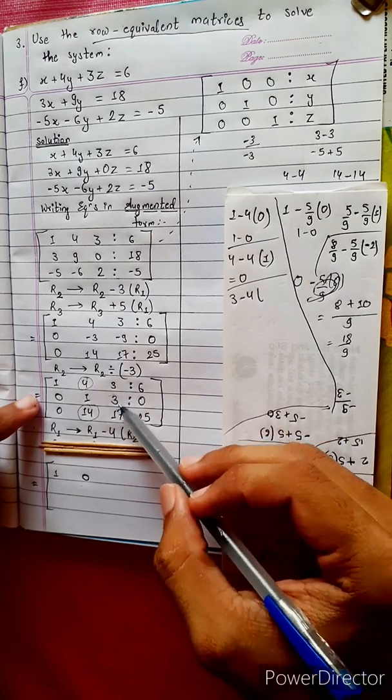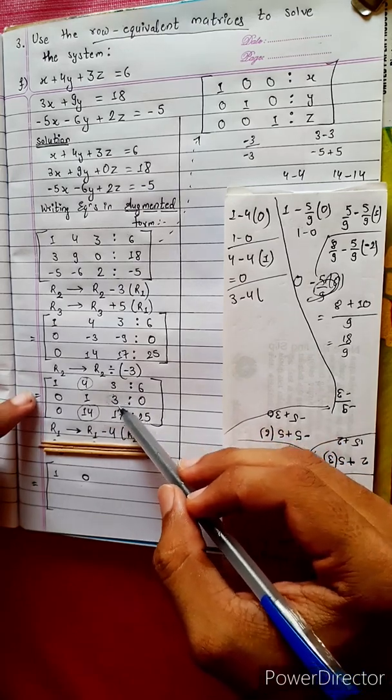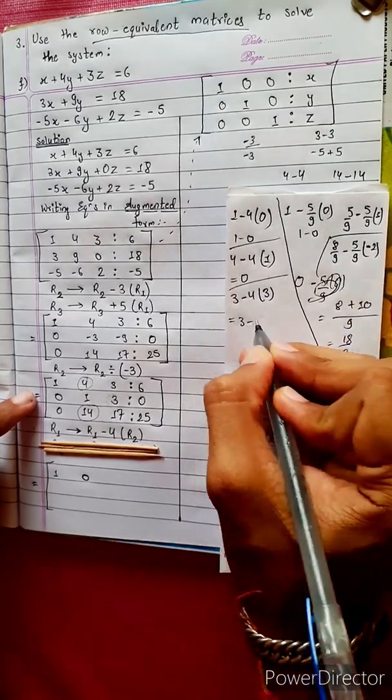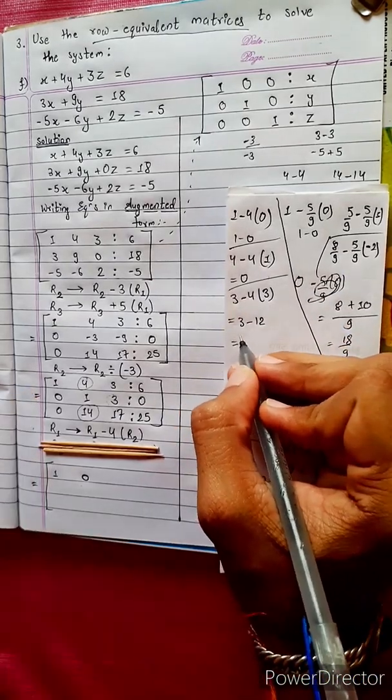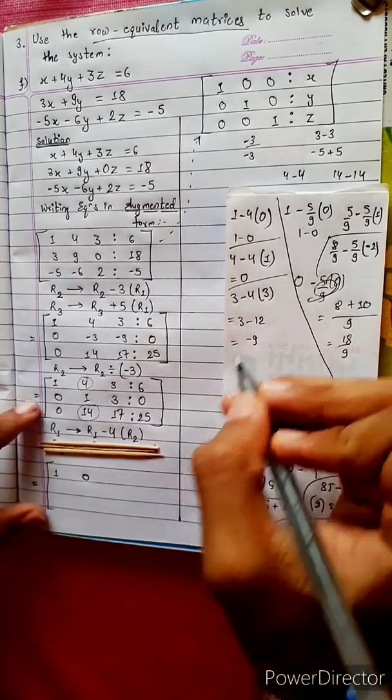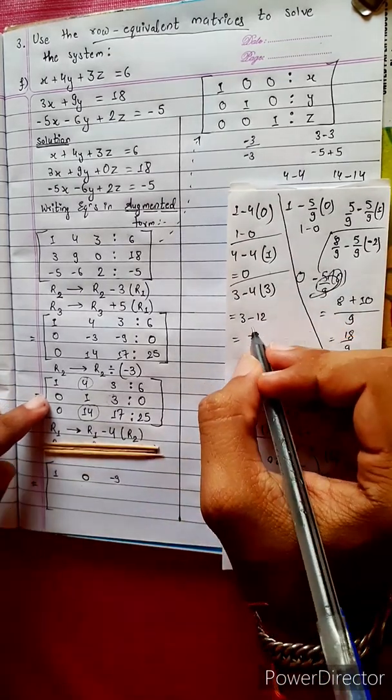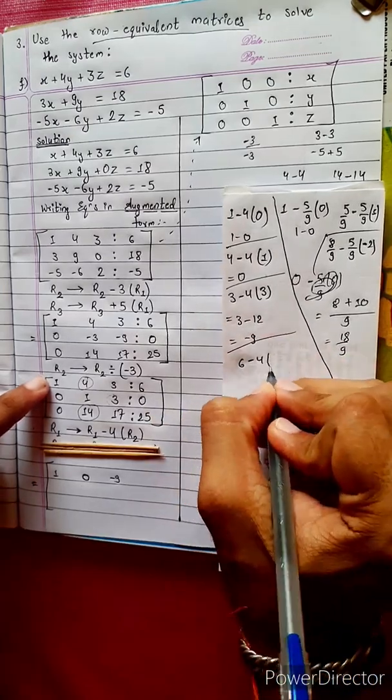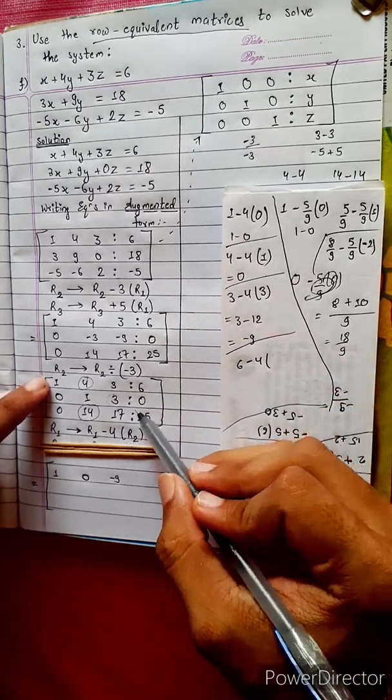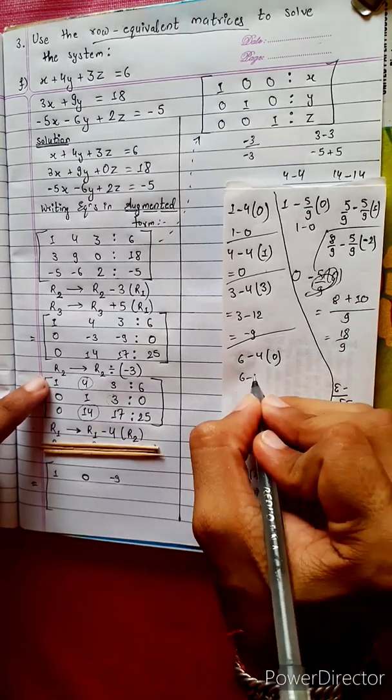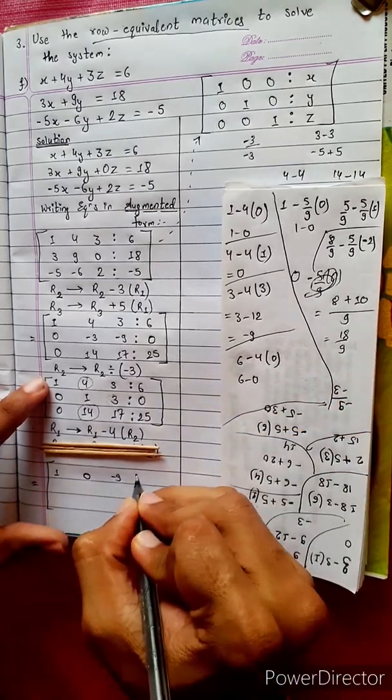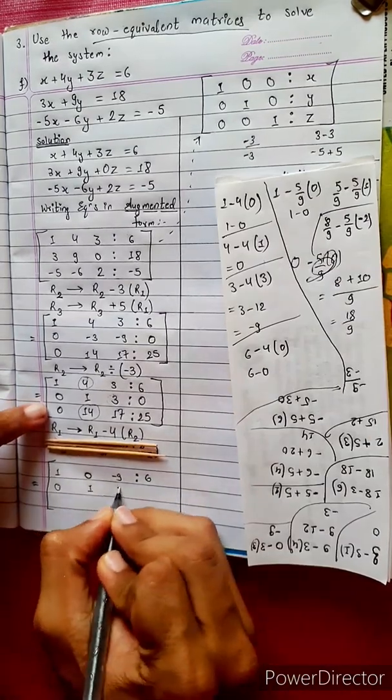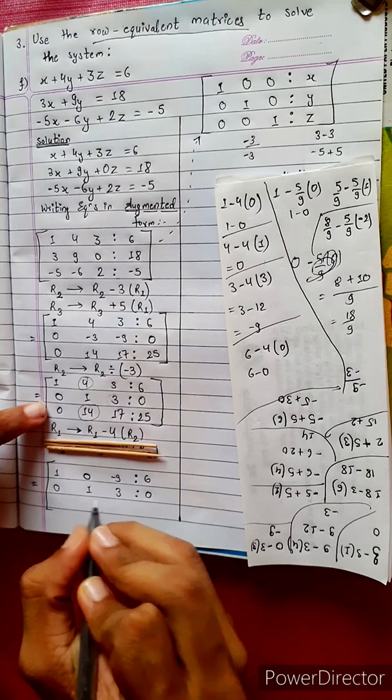R1 is 1 minus 4 times 0 equals 1, 4 minus 4 times 1 equals 0, 3 minus 4 times 3 equals minus 9, is to 6 minus 4 times 0 equals 6. R2 is 0, 1, 3 is to 0. R3 changes into R3 minus 14 times R2.